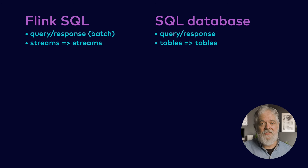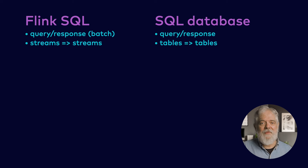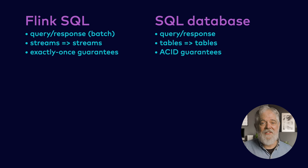In streaming mode, Flink SQL executes continuous queries that consume and produce streams. And in the general case, these streams can be changelog streams. So with Flink SQL, the queries have streams coming in and streams going out. The Flink documentation refers to these streams as dynamic tables, which helps to make the connection with databases where the queries have tables as their inputs and outputs. Flink SQL provides effectively exactly once guarantees, which is roughly equivalent to ACID guarantees on single key transactions.